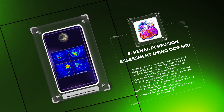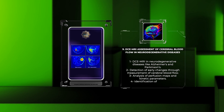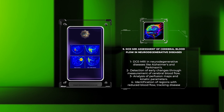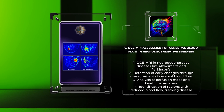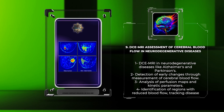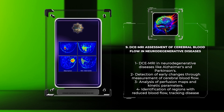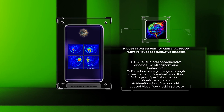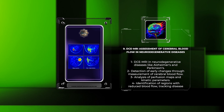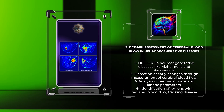In neurodegenerative diseases like Alzheimer's and Parkinson's, measuring cerebral blood flow through DCEMRI can help detect early changes. By analyzing perfusion maps and kinetic parameters, we can identify regions with reduced blood flow, track disease progression, and evaluate treatment effectiveness. DCEMRI shows promise for enhancing diagnosis and treatment outcomes in neurodegenerative diseases.